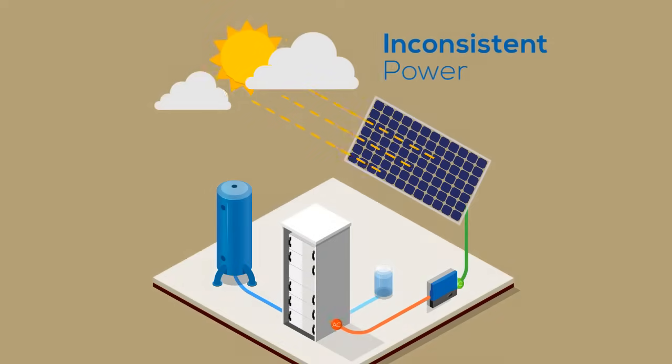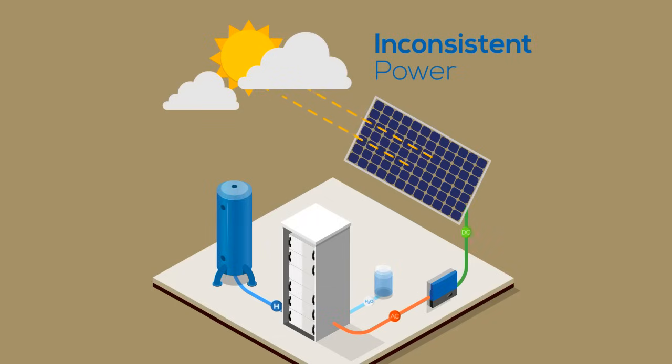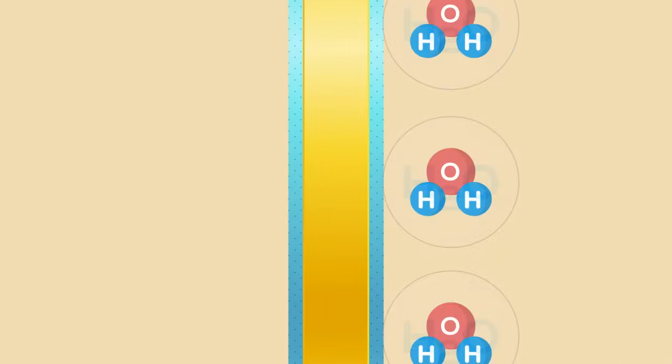It's able to make use of the fluctuating power supply from renewables and results in pure hydrogen due to the solid structure of the electrolyte. It is easy and more efficient.